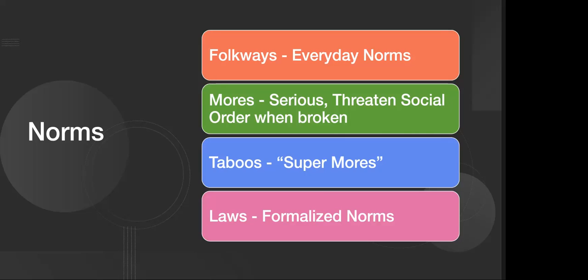Let's talk about norms. Norms are broken down in different perspectives. Folkways are everyday norms — things we violate or do not violate on a day-to-day basis, with complications on the micro side. Mores are serious threats to social order when broken — think of the word 'moral' and how it connects to mores. These usually revert to the side of laws. Taboos are super-mores — things such as incest and murder, cultural universals understood as wrong across most cultures.